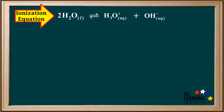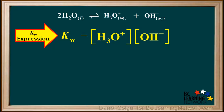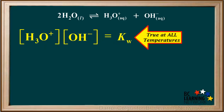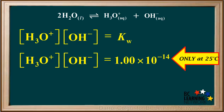Remember, this is the ionization equation for water. This process occurs in every sample that contains water. This is the Kw expression. It states that the product of hydronium and hydroxide ion concentrations is an equilibrium constant called Kw. The concentration of H3O+ times the concentration of OH- is always equal to Kw. This is true at all temperatures. However, the concentration of H3O+ times OH- is equal to 1×10⁻¹⁴ only at 25 degrees.